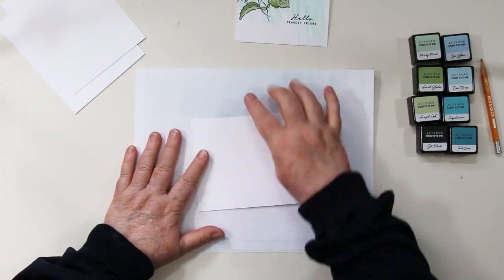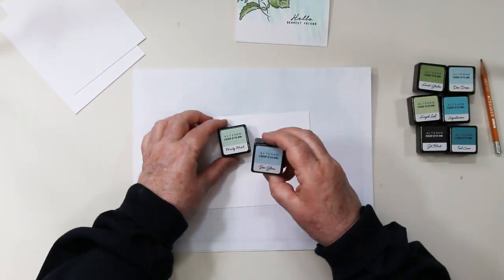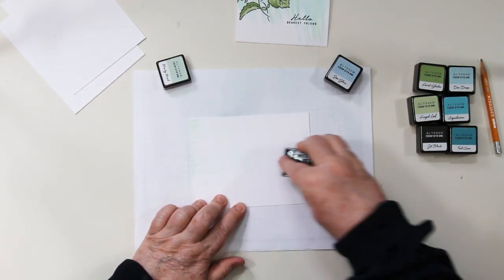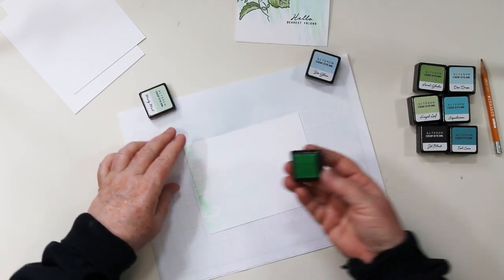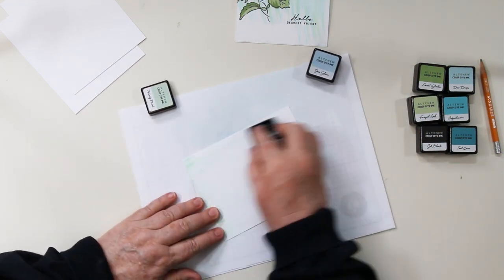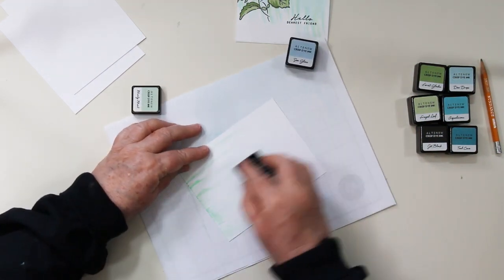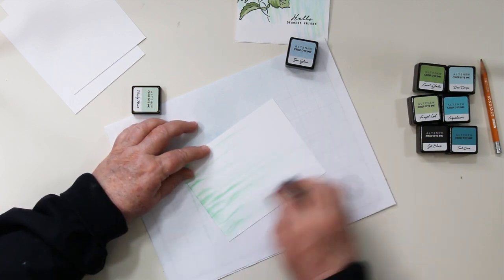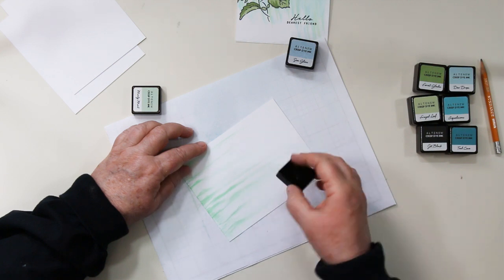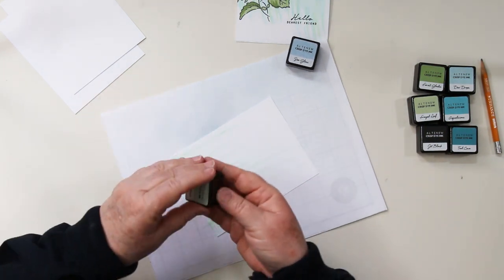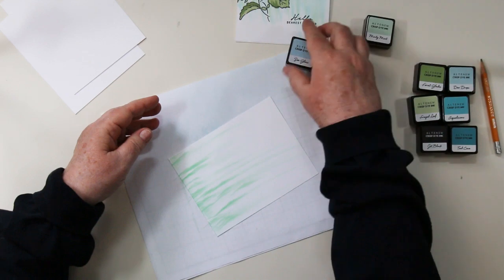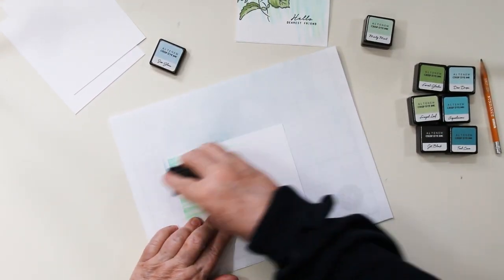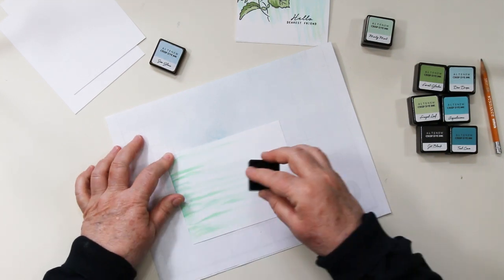I'm going to start with the background first and show you a really simple background technique using the ink pads from Altenew. These are the cubes and I'm using frayed leaf and dewdrop. I am starting with the green and pulling it from the top of the card down, and then I'm going to grab the blue, and again this is dewdrops.